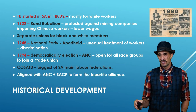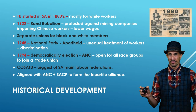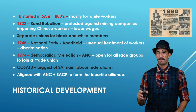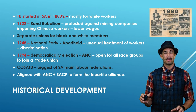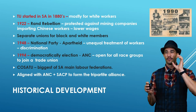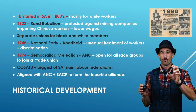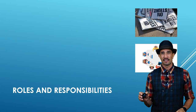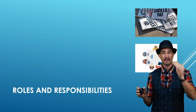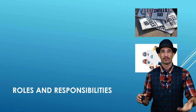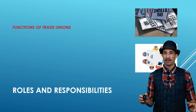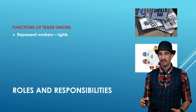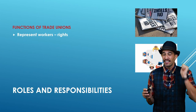Since 1994 with our democratically elected government, trade unions became open — everyone can join. One of the biggest trade unions is COSATU, and they are aligned with the ANC and SACP to form the Tripartite Alliance, to make sure that the people's voice is heard and to protect them.